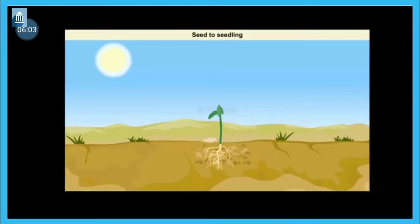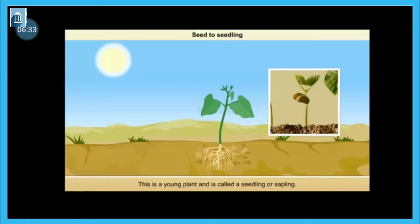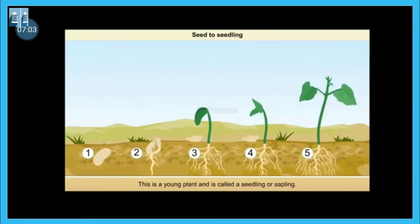The first pair of leaves of this baby plant are called cotyledons. Some plants have only one leaf — that is called monocotyledon. And some plants have two leaves — those are called dicotyledons. So leaves and roots started to develop, and afterwards it will grow into a young plant. This young plant is called a seedling or sapling. This entire process — from seed to roots, to leaves, to a young plant — is called seed germination.